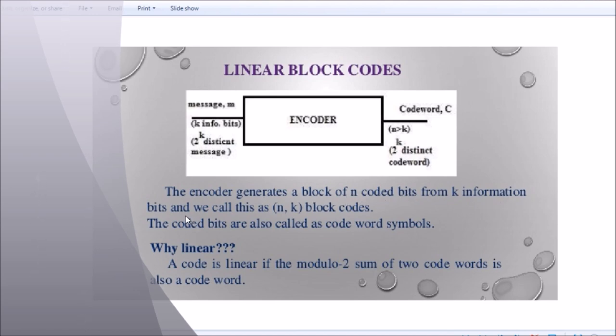Just a question is 6,3 block code, 7,4 block code, this type. The coded bits are also called as codeword symbols. While a code is linear, if the modulo 2 sum of two codewords is also a codeword, which I already told you.